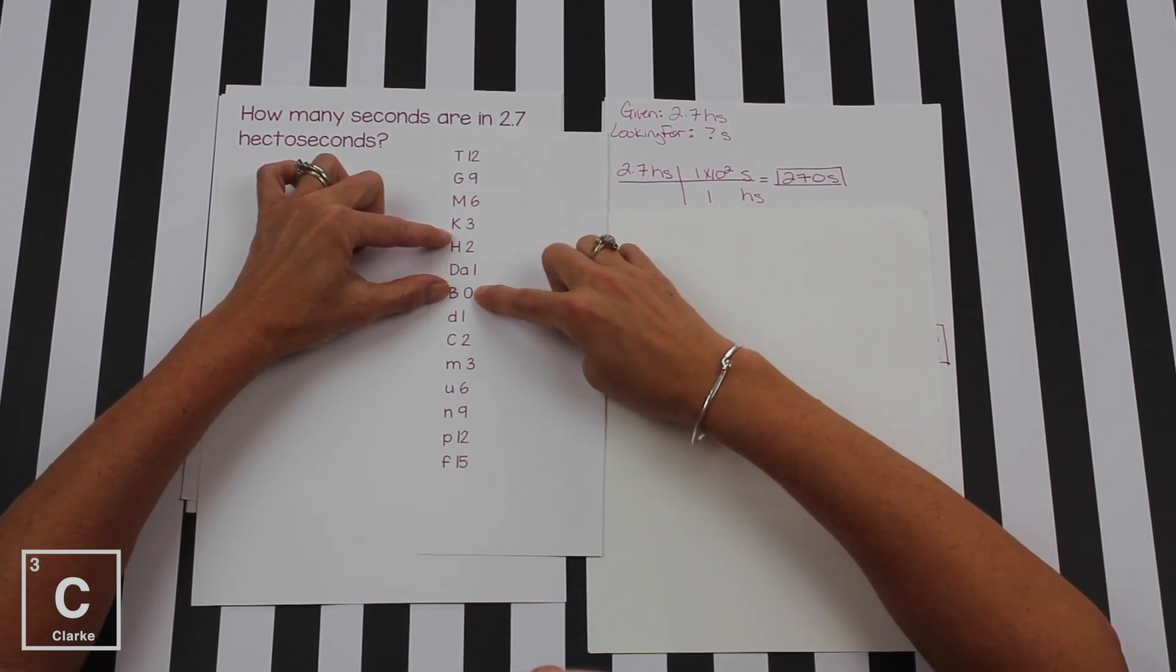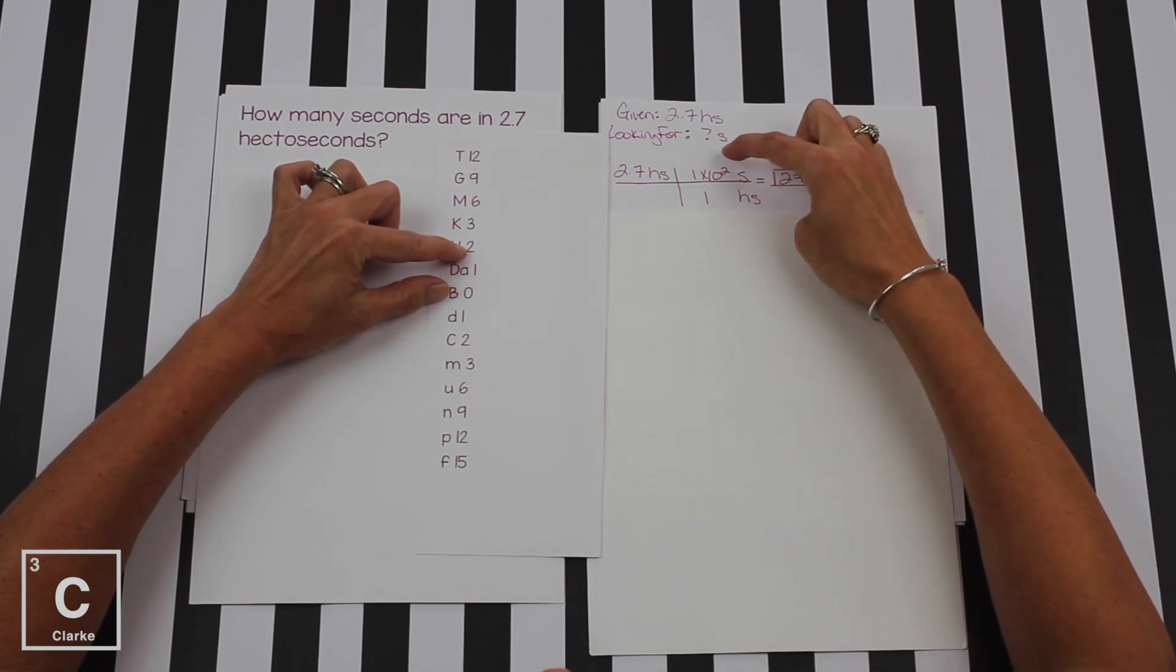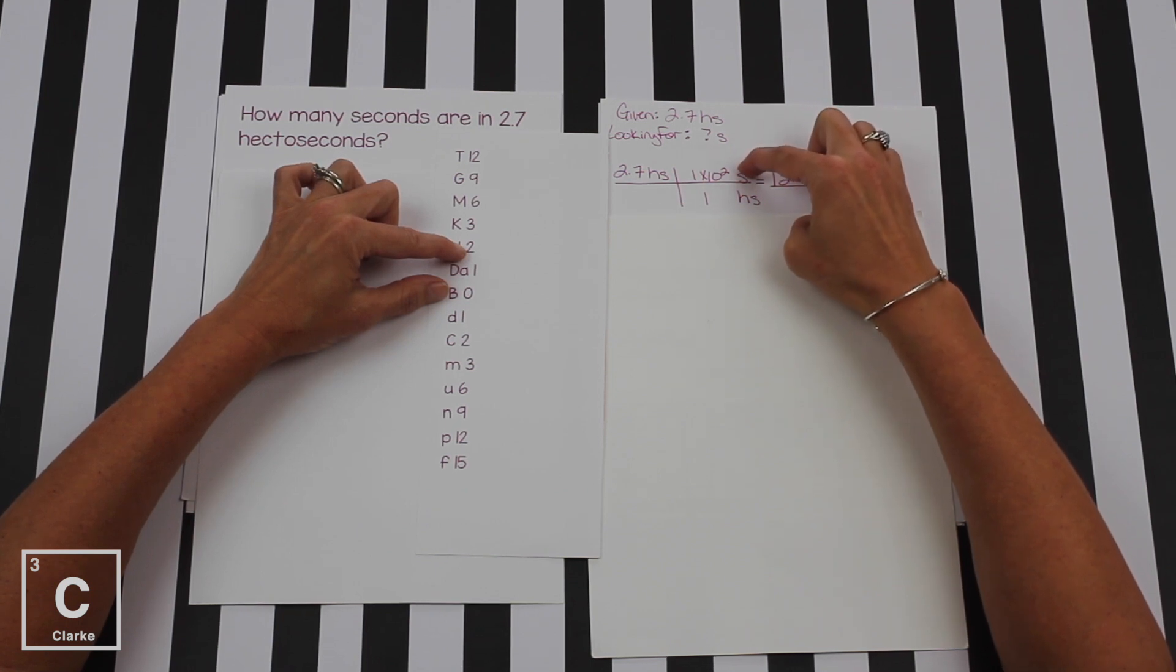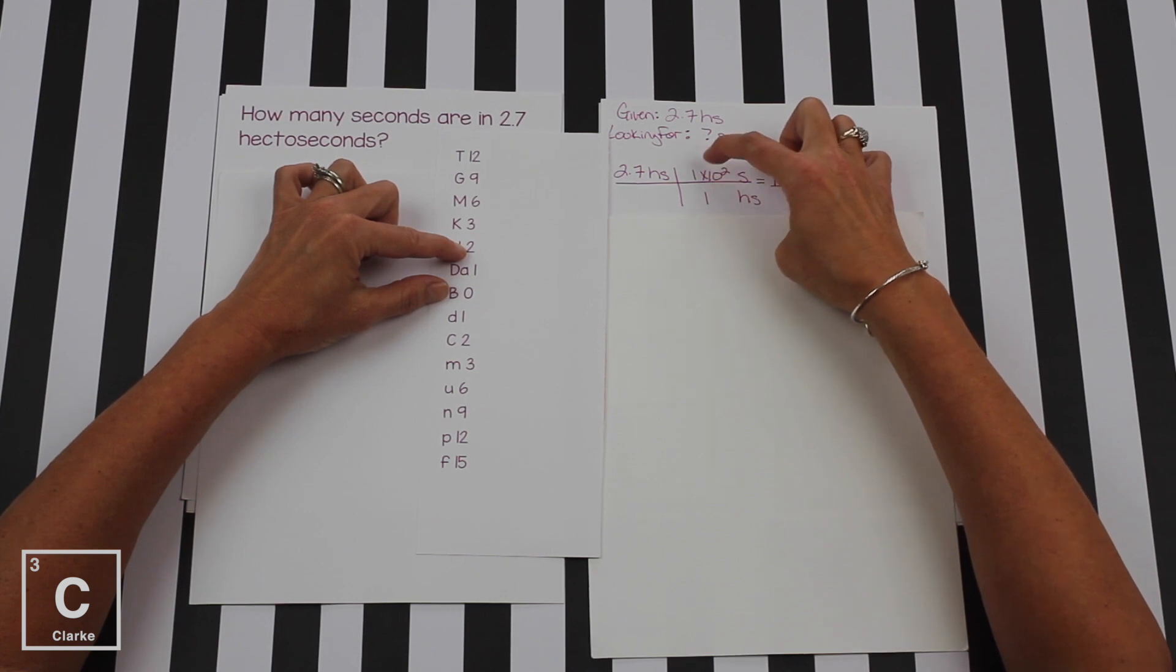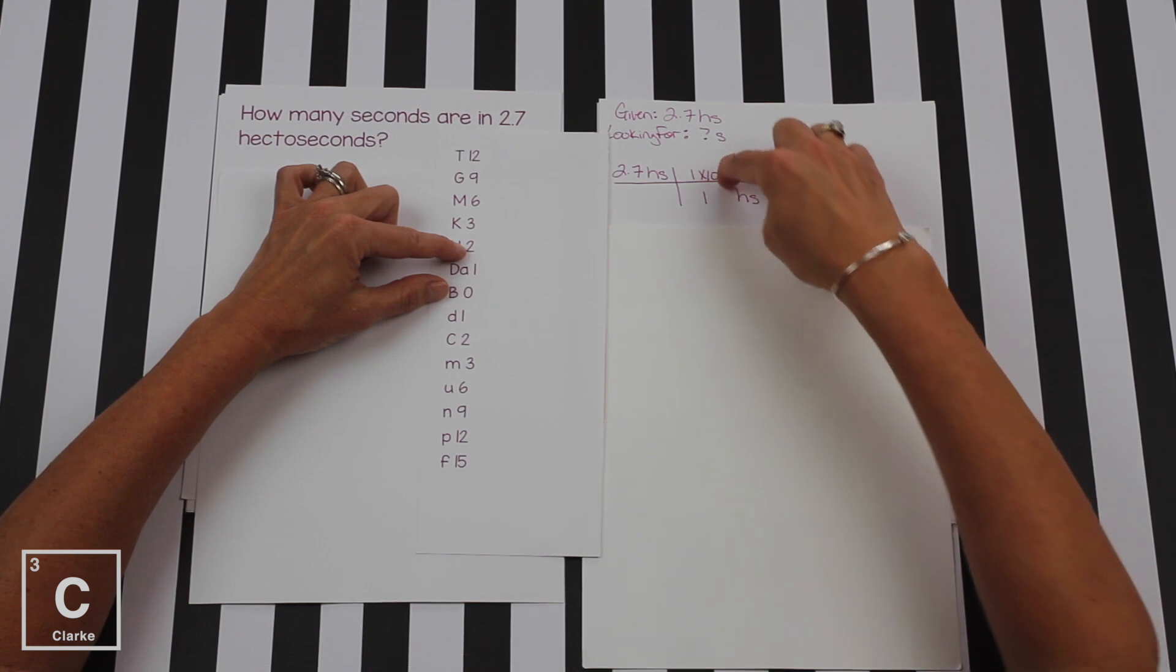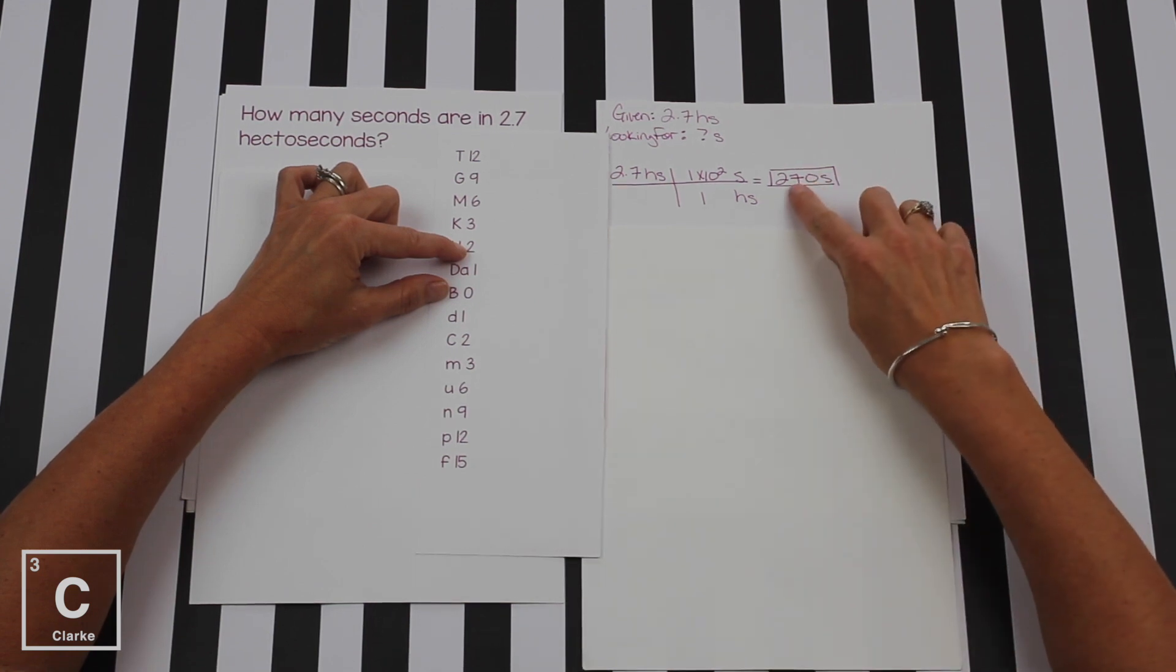That's going to tell us how to orient our conversion factor. Then we look over here to figure out what is our conversion factor. The biggest unit gets a one. Hectos on top, it gets a one. That two is going to go with seconds. So one hectosecond is equal to 1 times 10 to the second seconds. If you're already familiar with scientific notation, you might realize that just means 100. And you are correct.